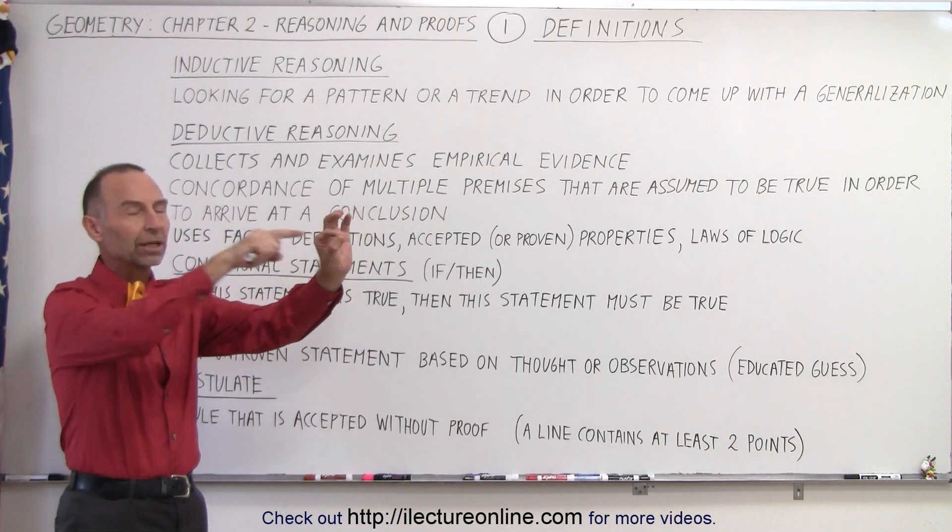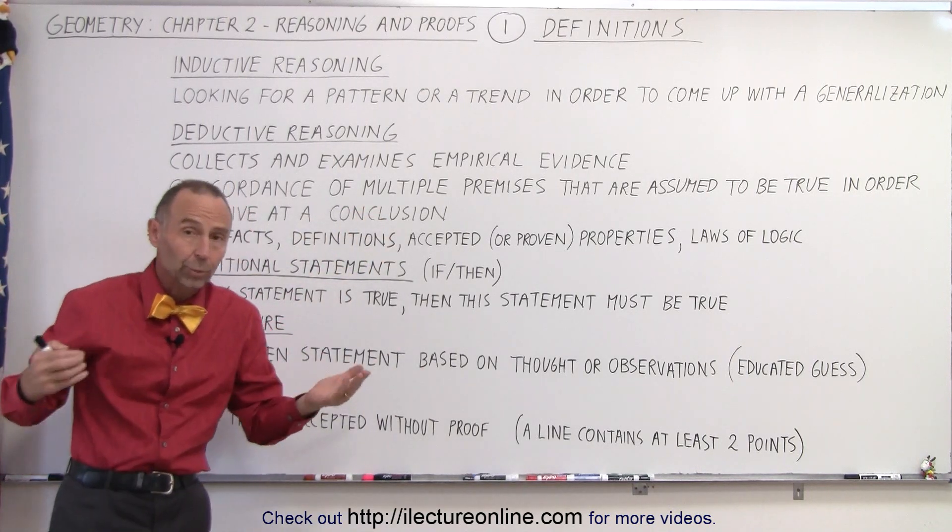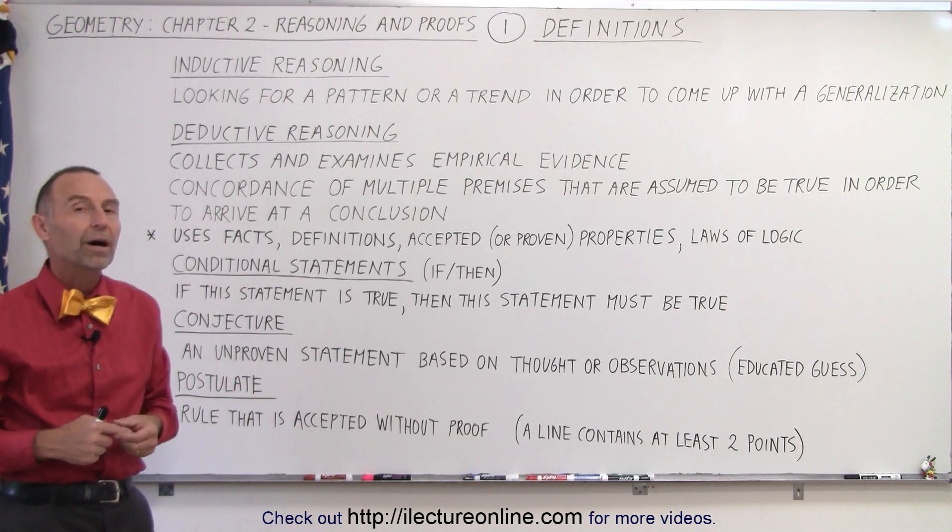You have two points. You connect them with a line. Any two points can be connected with a line, so therefore we can say we're not going to prove that mathematically. We're just going to accept it. We call that a postulate.